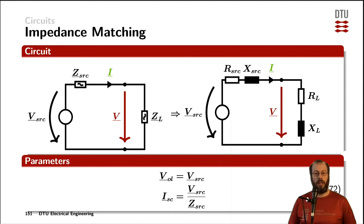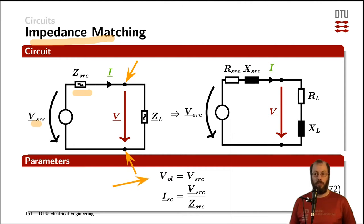We can use a Thevenin equivalent circuit to explain impedance matching in terms of current and voltage on the nodes. The open load voltage at these terminals is the source voltage — open load means we remove the load impedance and leave it open. The short circuit current is the source voltage divided by the source impedance, meaning we short those two nodes.